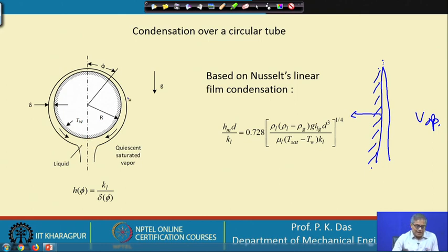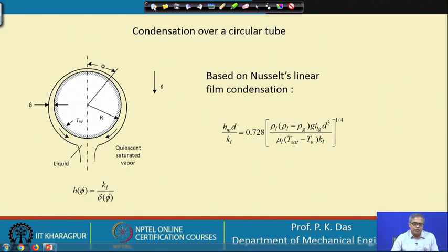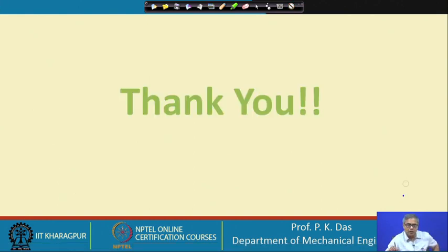This is important — we end up with a thick film. There are many methods for reducing film thickness. The Nusselt formula is simple, derived from all the properties and geometrical parameters, and easy to use. With that, we can proceed to the current lecture on surface condensers.